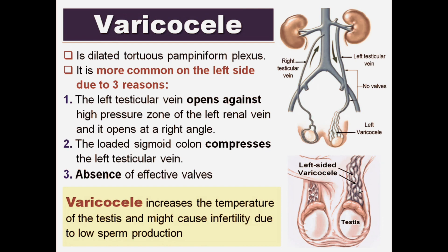Varicocele increases the temperature of the testis and might cause infertility due to low sperm production. It is more common on the left side: the left testicular vein drains against the high pressure zone of the left renal vein; compression of the left testicular vein by the loaded sigmoid colon; and no valves in the left testicular vein. Varicocele increases testicular temperature and might lead to infertility due to low sperm production.